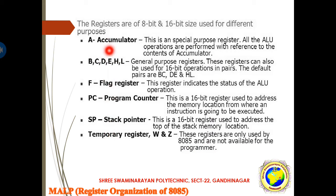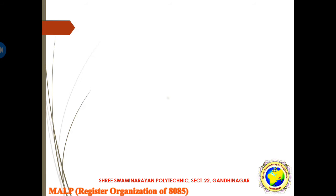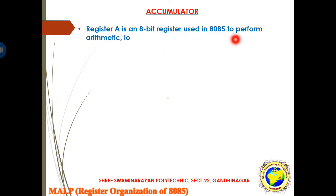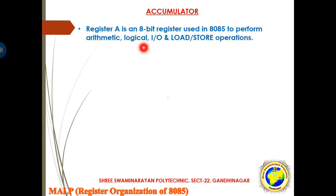Let's start with the accumulator. Register A is the 8-bit register used in 8085 to perform arithmetic, logic, input-output, load, or store operations. Register A is quite often called the accumulator. An accumulator is a register for short-term intermediate storage of arithmetic and logic data. In a CPU arithmetic operation involving two operands, one operand has to be in this register.